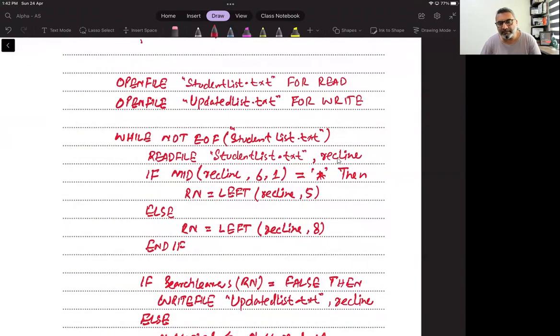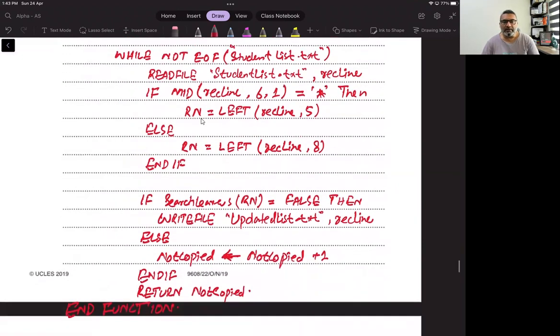Now that we have read a record from the file in rect line string array, then we have to check if mid of rect line 6 comma 1, it means that the reference is five characters. So we have extracted five characters from the left of the record line. And if it is not at the sixth position, definitely it is at the ninth position. In that case, we will be extracting from the left of the rect line eight characters. So whatever the case, either it is of five characters or eight characters, it has been extracted in the reference number variable, which is obviously a string.